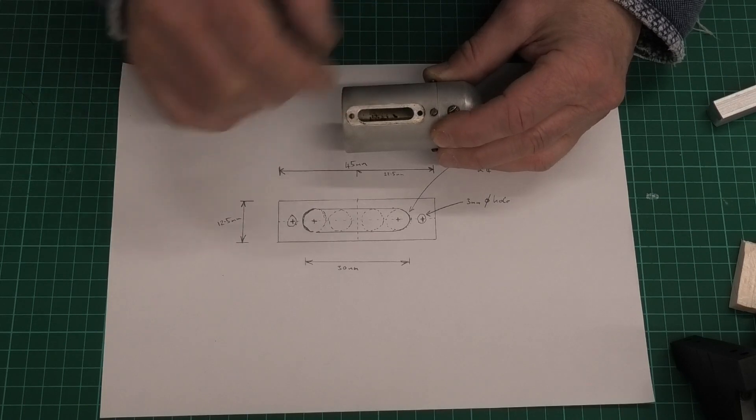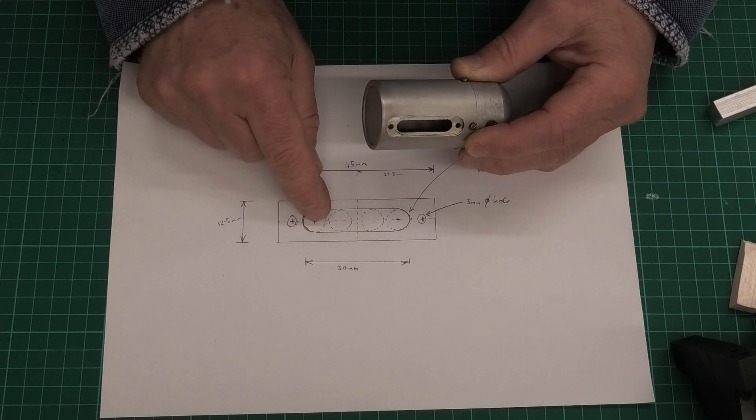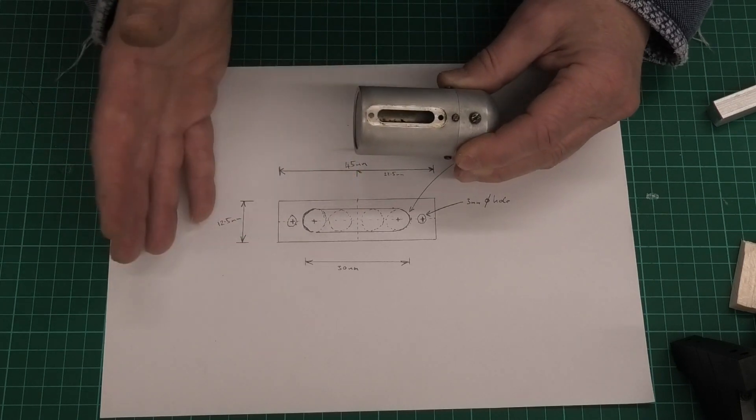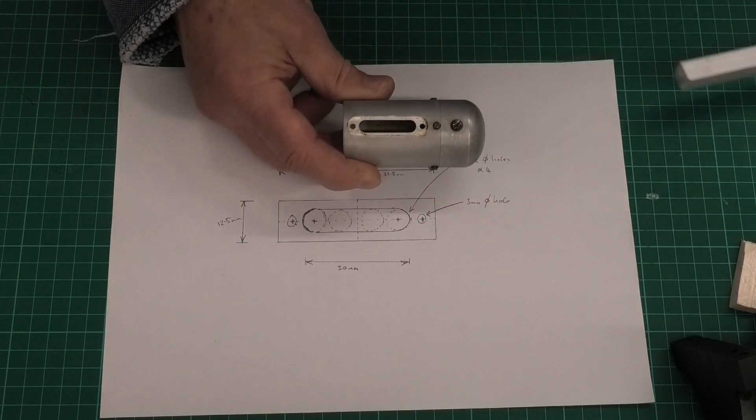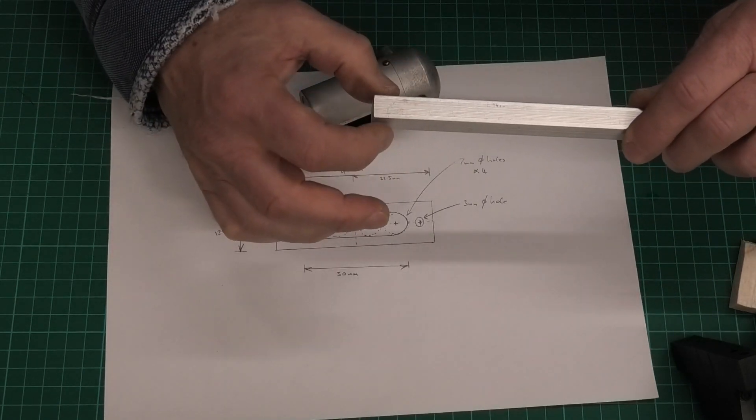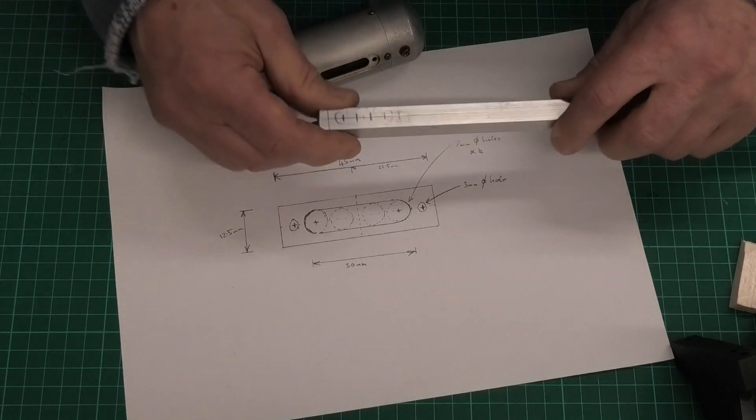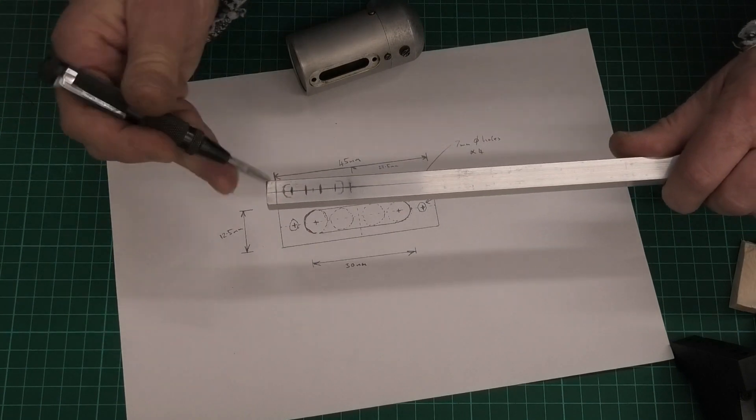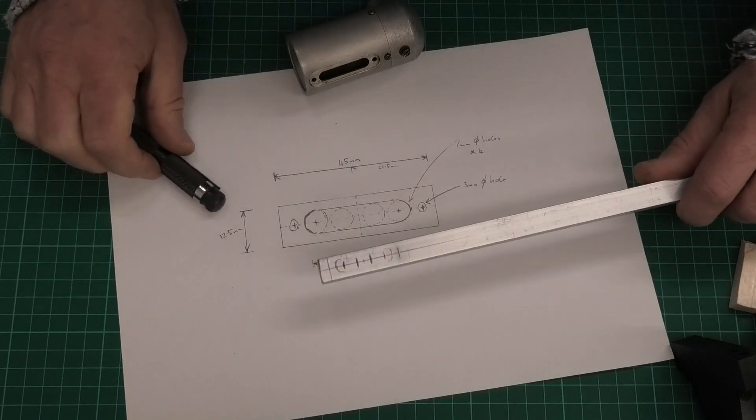What I'm gonna do is I'm gonna drill four holes and I'm gonna do them less than seven mil, probably five mil, and then I'm gonna file this out. I'd rather do that than try and do it with a seven mil drill in case there's a little bit of drift. I've marked the two crosses where the holes are for the muffler bolts and then I'm gonna drill my four holes there and file that out.